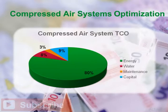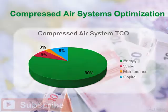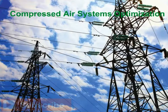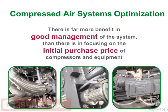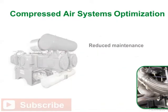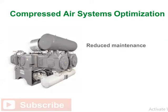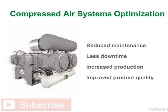Electricity costs can represent hundreds of thousands of euros or dollars. Initial capital costs are just 9%. In a typical water-cooled system, water runs at about 8% and maintenance at 3%. Often, system improvements can result in electricity savings of 20% to 50%. Evidently, there is far more benefit in good management of the system than in focusing on the initial purchase price of compressors and equipment. Other benefits of a well-managed system include reduced maintenance, less downtime, increased production, and improved product quality.